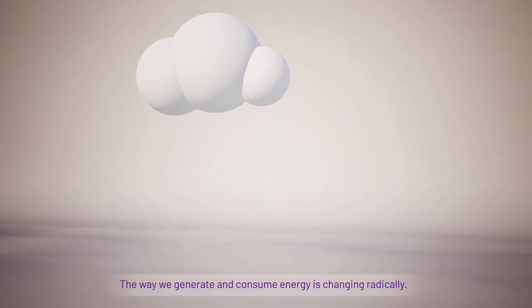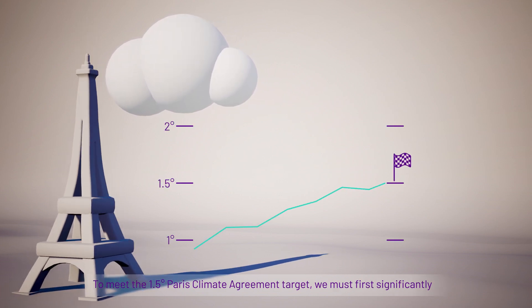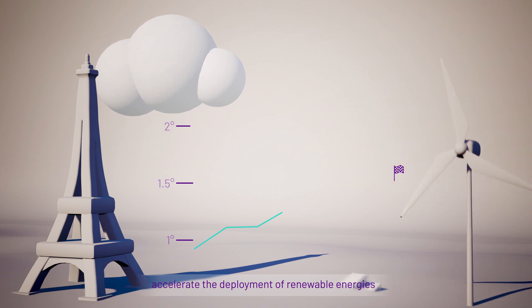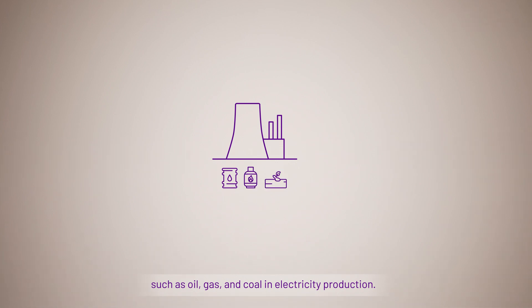The way we generate and consume energy is changing radically. To meet the 1.5 degree Paris Climate Agreement target, we must first significantly accelerate the deployment of renewable energies and permanently phase out fossil fuels such as oil, gas and coal in electricity production.